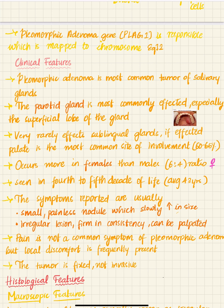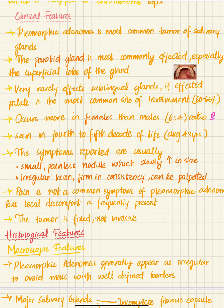Pleomorphic adenoma is the most common tumor of the salivary gland, mainly affecting the parotid gland — especially the superficial lobe of the parotid gland. It rarely affects the sublingual glands. The parotid gland anatomy includes the superficial surface, apex, anteromedial surface, anterior surface, and posterior surface.